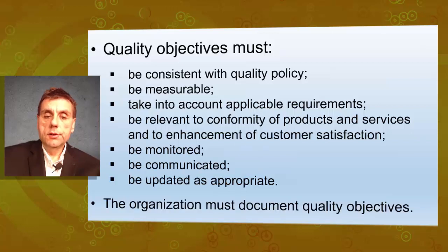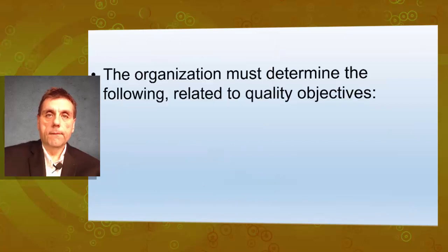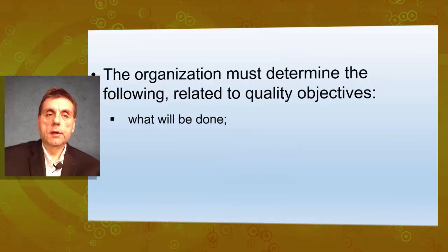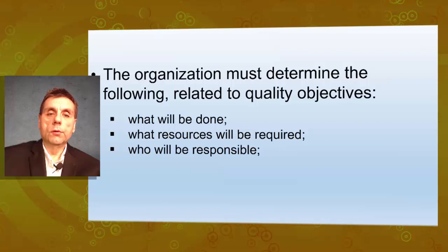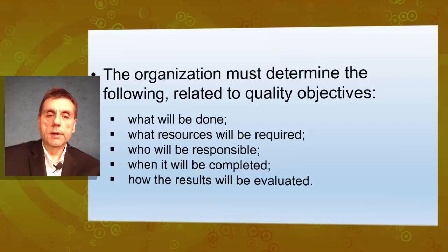The organization must document quality objectives, meaning it must have evidence of its quality objectives. The organization must also determine the following: what will be done, what resources will be required, who will be responsible, when it will be completed, and how the results will be evaluated.